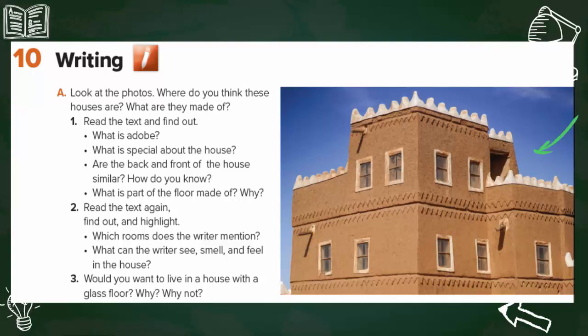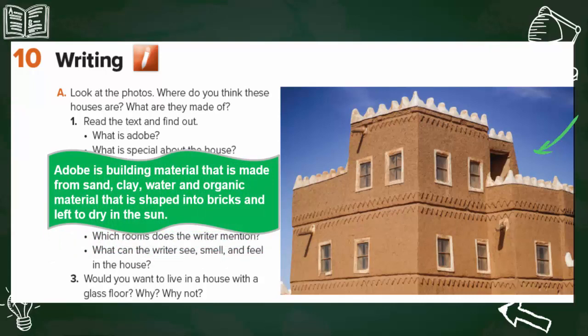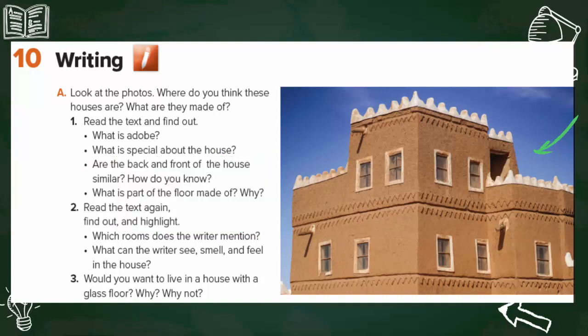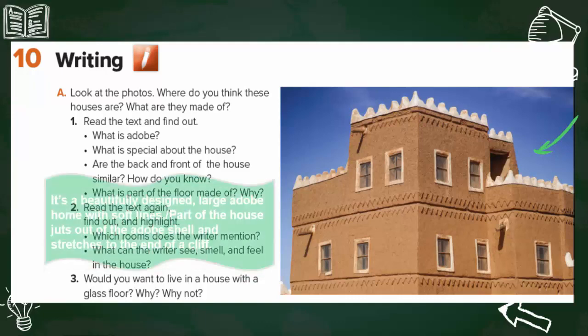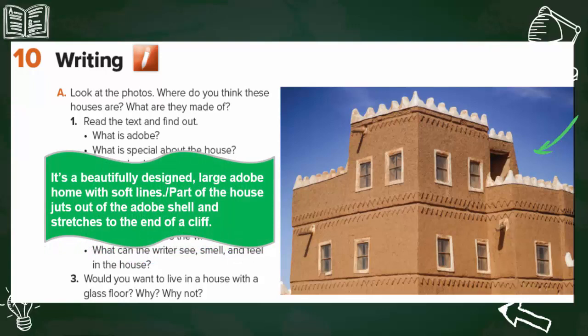Okay dear student, now we will discuss these questions talking about this photo. Read the text and find out: What is Adobe? Adobe is a building material that is made from sand, clay, water and organic material that is shaped into bricks and left to dry in the sun.